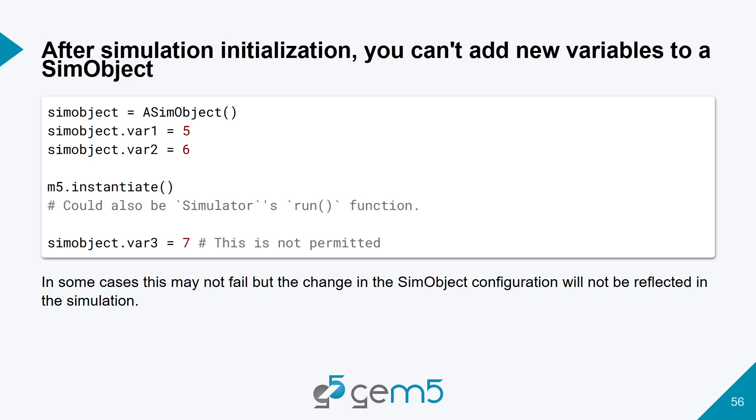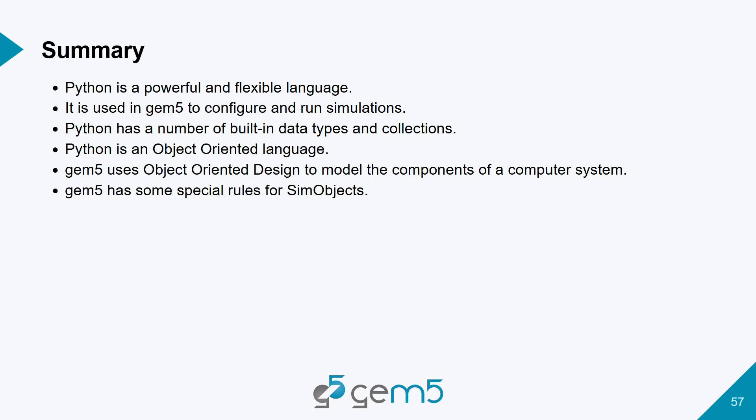The instantiate function is actually called within simulate.run, so you might not always see it explicitly. Have everything done before you press that button. In summary: Python is a powerful and flexible language used in gem5 to configure and run simulations. gem5 uses object-oriented design to model components of a computer system, but it does so in a special way — it's about 99% standard Python with one or two things slightly different, which is easy to forget. We'll use object-oriented design in the next session to build what we want to build.